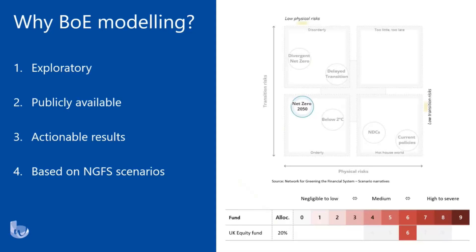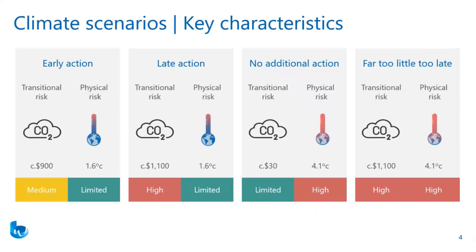By looking at the Bank of England modelling we're going to look at four key scenarios. I'm going to group the first three on the screen together and then touch on the far too little too late scenario separately at the end. Within the early action, late action, and no additional action scenarios, the data looks at the difference in transitional and physical risks and how this could impact asset classes and funds. Transitional risk can be thought of as the risk to an asset class or fund in the transition to a net zero world — a good proxy for which is carbon tax, as transitioning to net zero will likely require a cost associated with high-emitting activities.